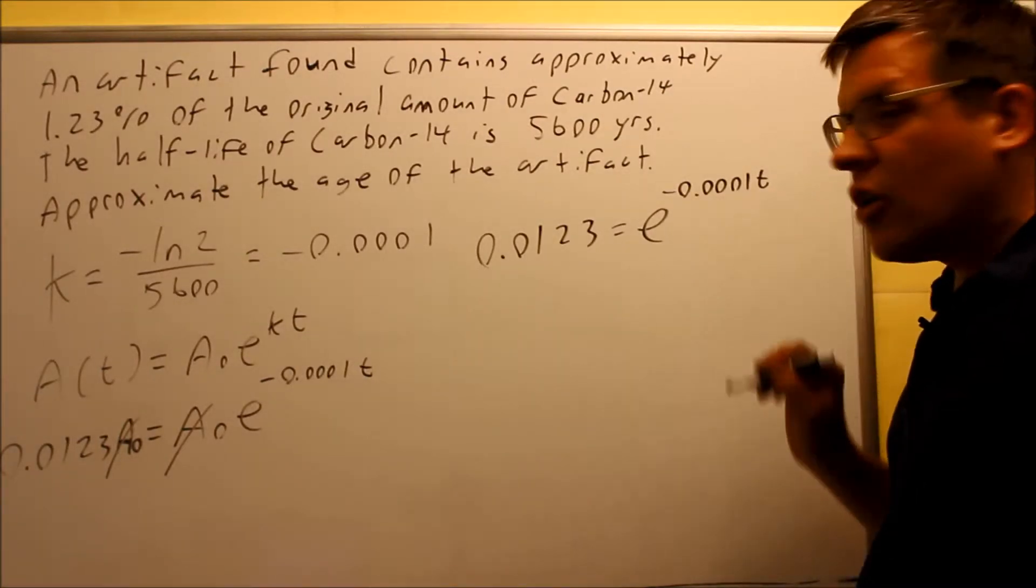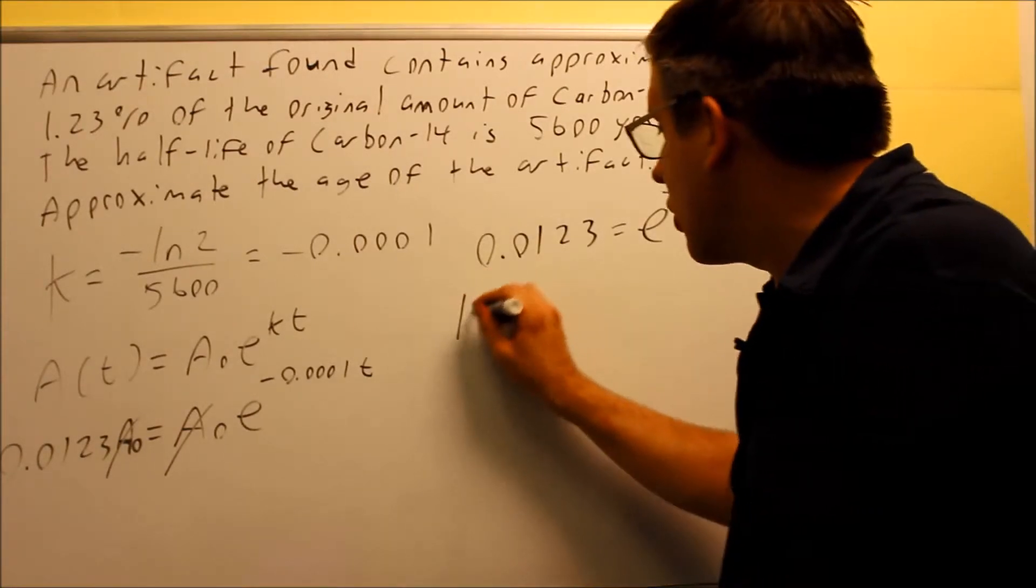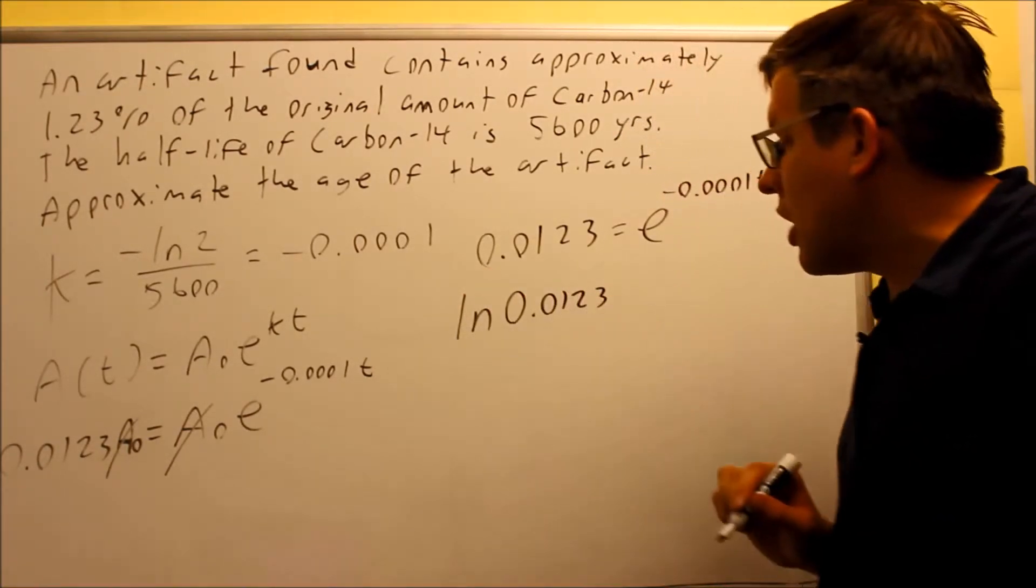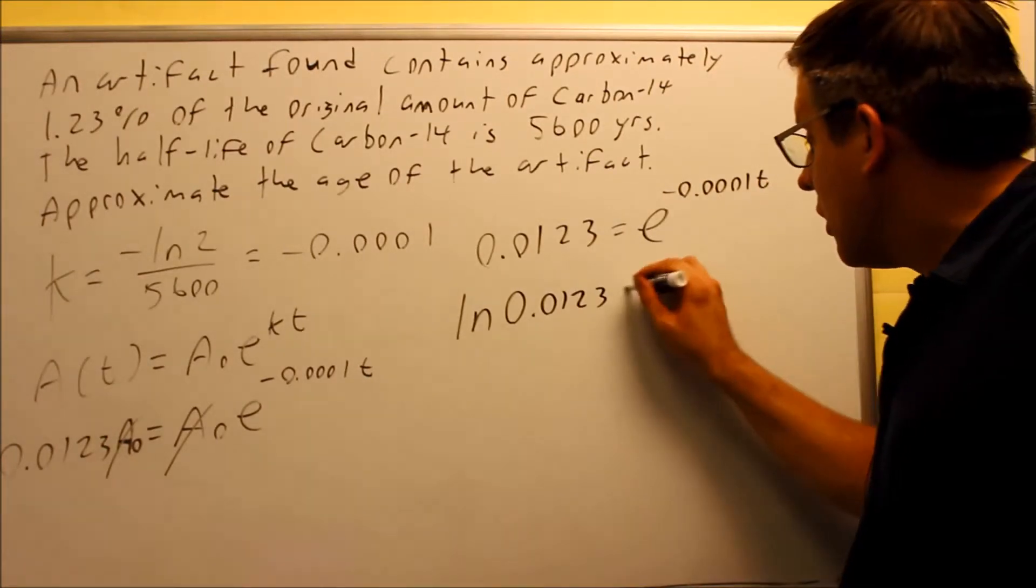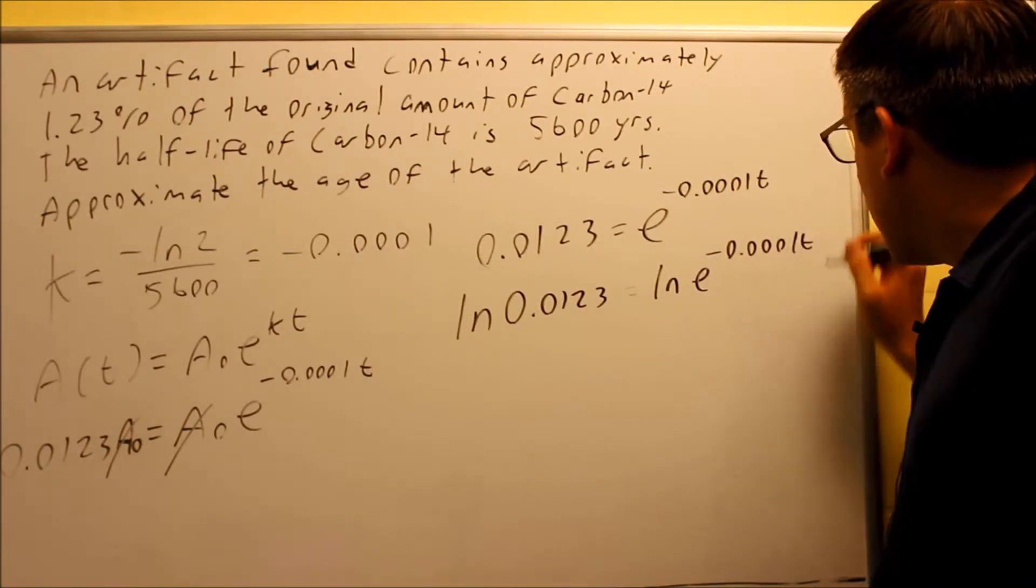We want to solve for the time, and that's going to tell us the approximate age of the artifact. To do this, you're going to take the natural log of both sides. So I have the natural log of 0.0123. I'm also going to do natural log of this side also.